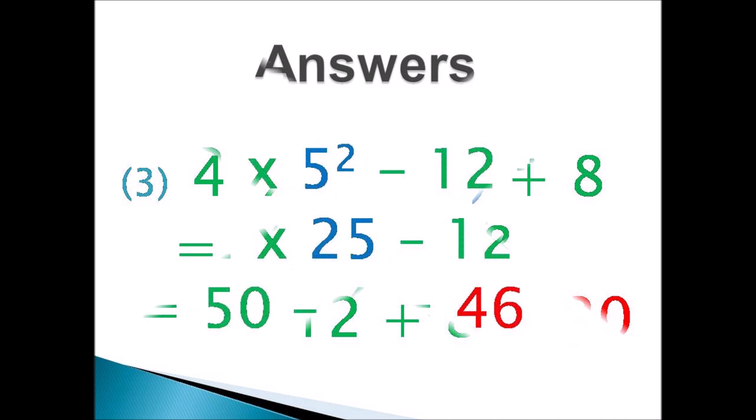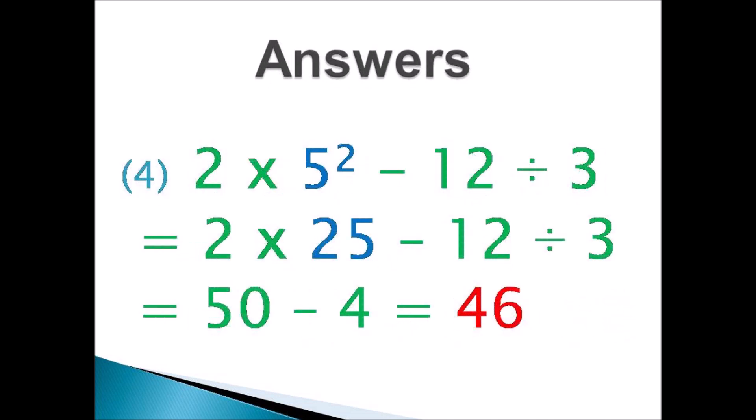Answer 4: 2 times 5 squared minus 12 divided by 3. Work the exponent first — 5 to the power of 2 is 25. Then 2 times 25 take away 12 divided by 3. Multiply — 2 times 25 is 50. Then divide — 12 divided by 3 is 4. Finally subtract: 50 take away 4 is 46.